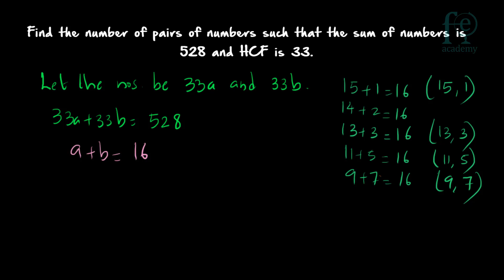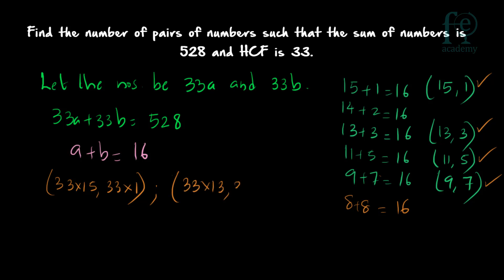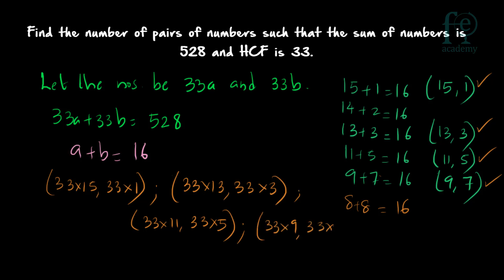After 8+8, values start repeating in reverse. So the valid co-prime pairs (A, B) are: (15,1), (13,3), (11,5), and (9,7). The corresponding number pairs are: 33×15 and 33×1; 33×13 and 33×3; 33×11 and 33×5; and 33×9 and 33×7. Therefore, 4 number pairs are possible where the sum of the numbers is 528 and the highest common factor is 33.